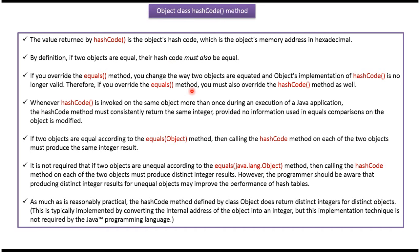If you override the equals method, you change the way two objects are equated and the object's implementation of hashcode is no longer valid. Therefore, if you override the equals method, you must also override the hashcode method as well.